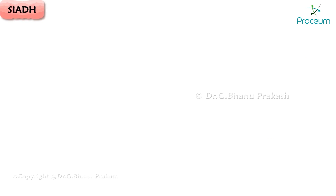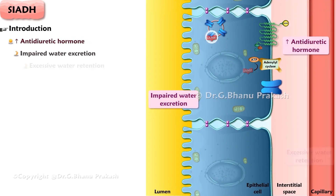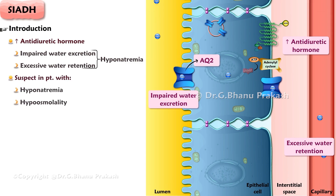Syndrome of Inappropriate Antidiuretic Hormone Secretion — Introduction. SIADH is a condition that happens when your body makes too much antidiuretic hormone, leading to impaired water excretion and excessive water retention, leading to the development of hyponatremia. SIADH should be suspected in any patient with hyponatremia, hypoosmolality, and a urine osmolality above